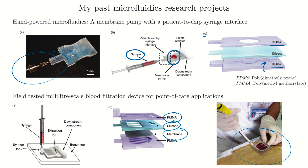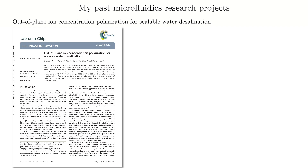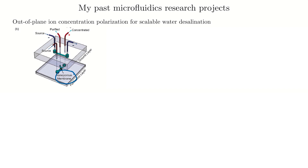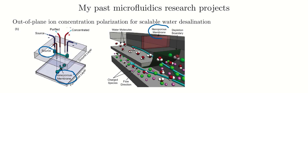Another project used ion concentration polarization (ICP) for scalable water desalination. We used a nanoporous membrane in a layered 3D device. You had your source salty water, and by applying ICP we created a depletion boundary where charged ions were depleted. This caused the salt ions — the charged species — to be deflected down into a lower channel, while only non-charged water molecules could pass through the depletion boundary into a separate upper channel. So we could actually separate the purified water from the concentrated salt. This blends microfluidics with nanoporous technology at the 10⁻⁹ meter scale.